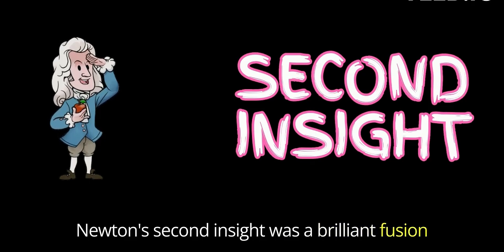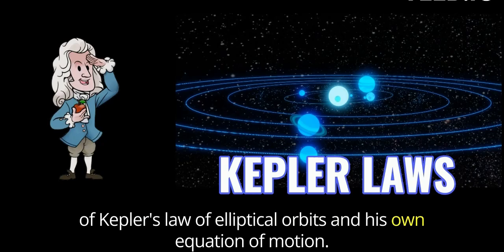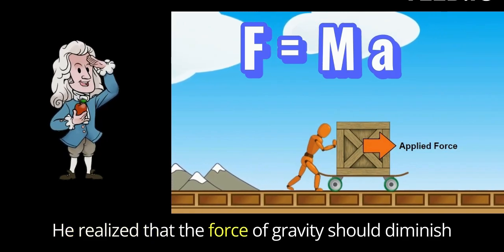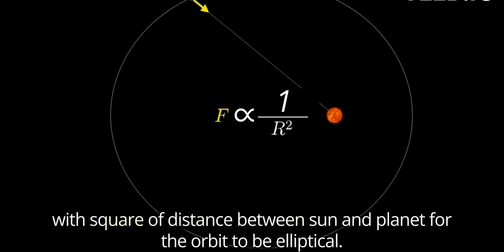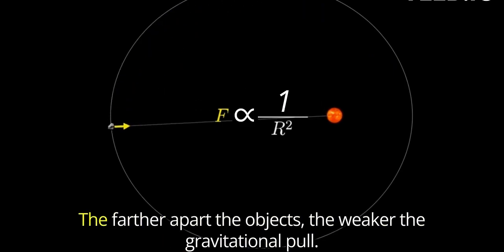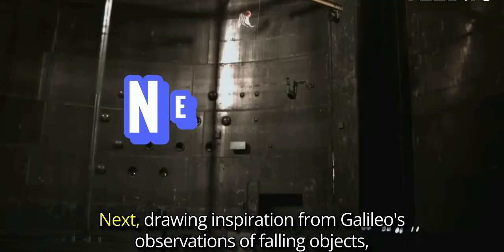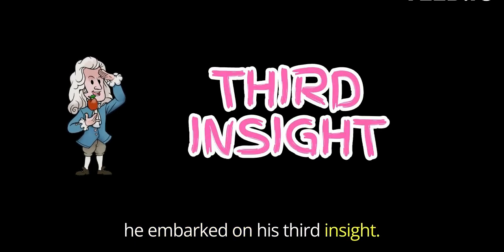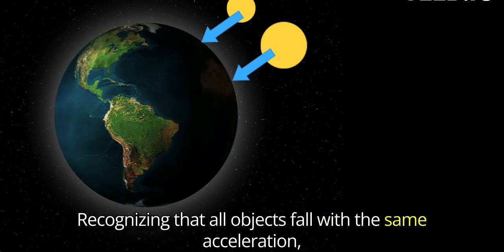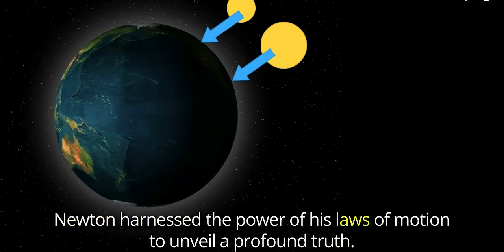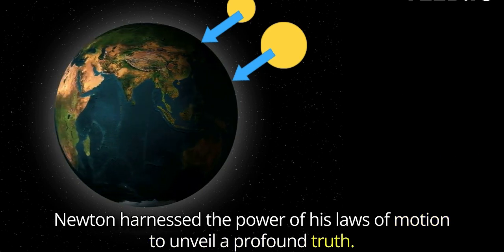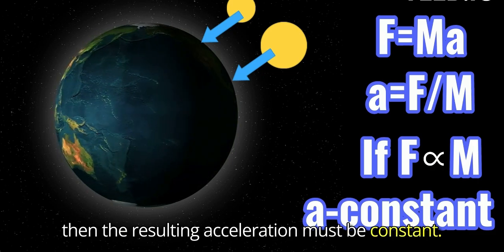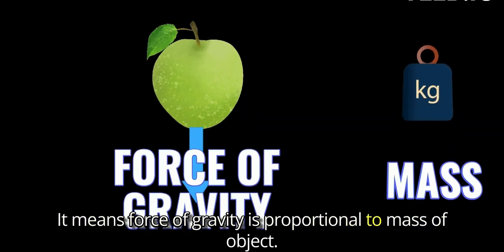Newton's second insight was a brilliant fusion of Kepler's law of elliptical orbits and his own equation of motion, F equals mass times acceleration. He realised that the force of gravity should diminish with square of distance between sun and planet, for the orbit to be elliptical. The farther apart the objects, the weaker the gravitational pull. Next, drawing inspiration from Galileo's observations of falling objects, he embarked on his third insight. Recognising that all objects fall with the same acceleration, Newton harnessed the power of his laws of motion to unveil a profound truth. If the force of gravity is indeed proportional to the mass of an object, then the resulting acceleration must be constant. It means force of gravity is proportional to mass of object.